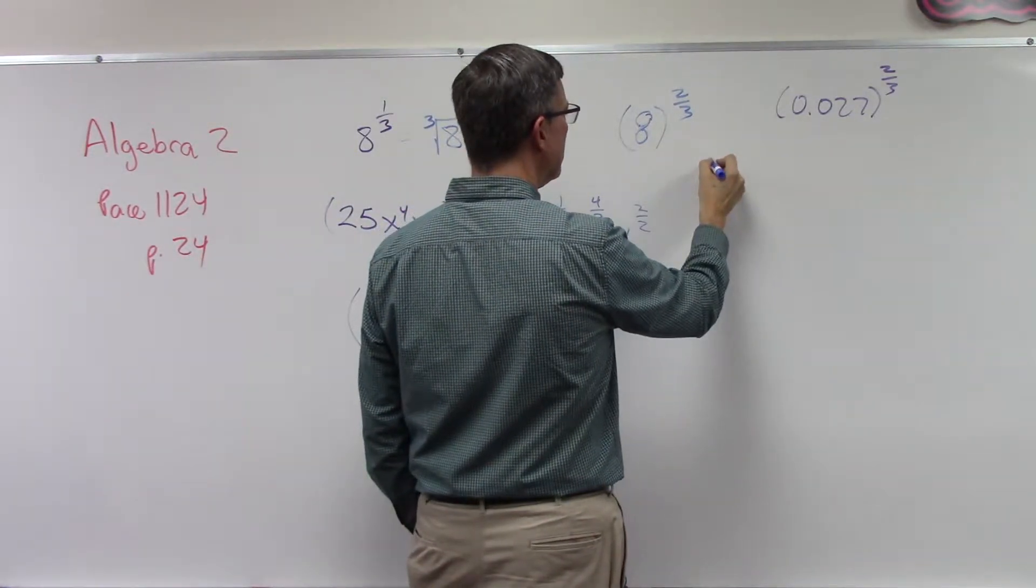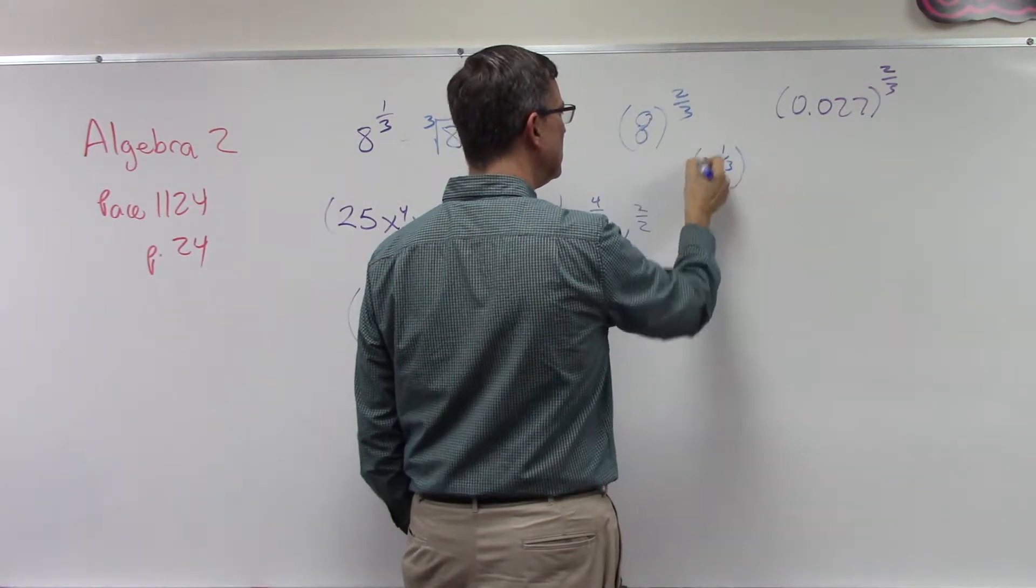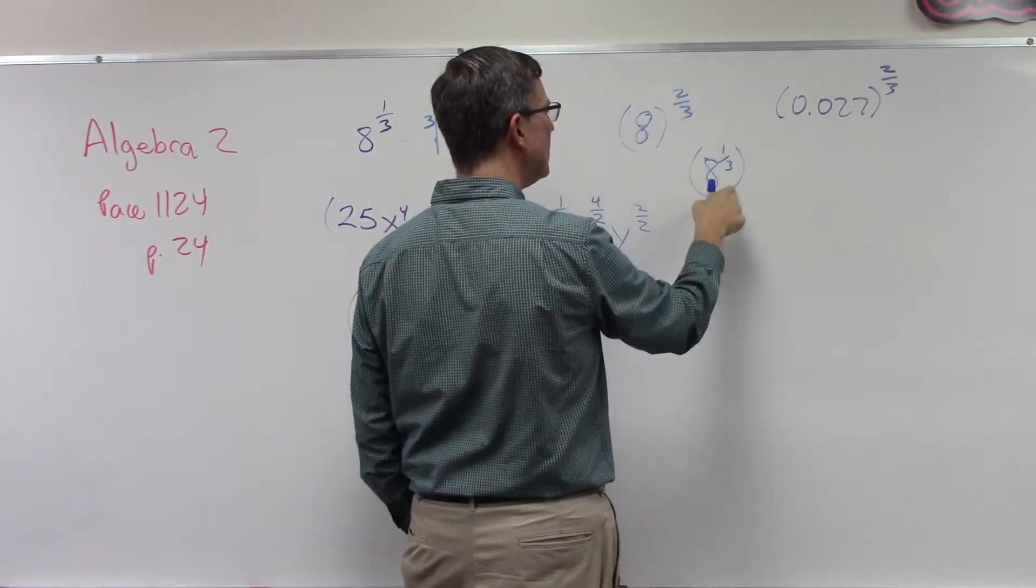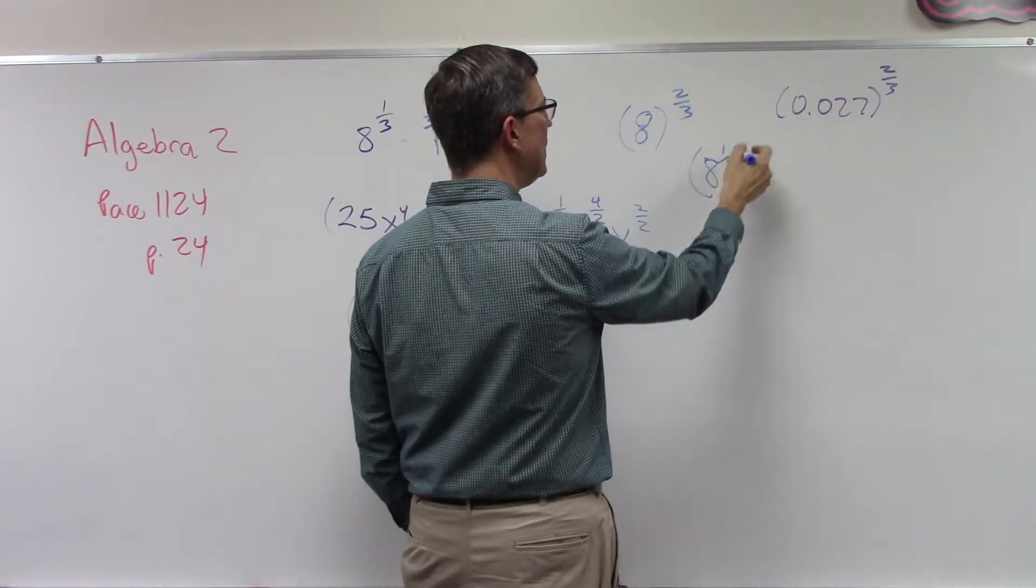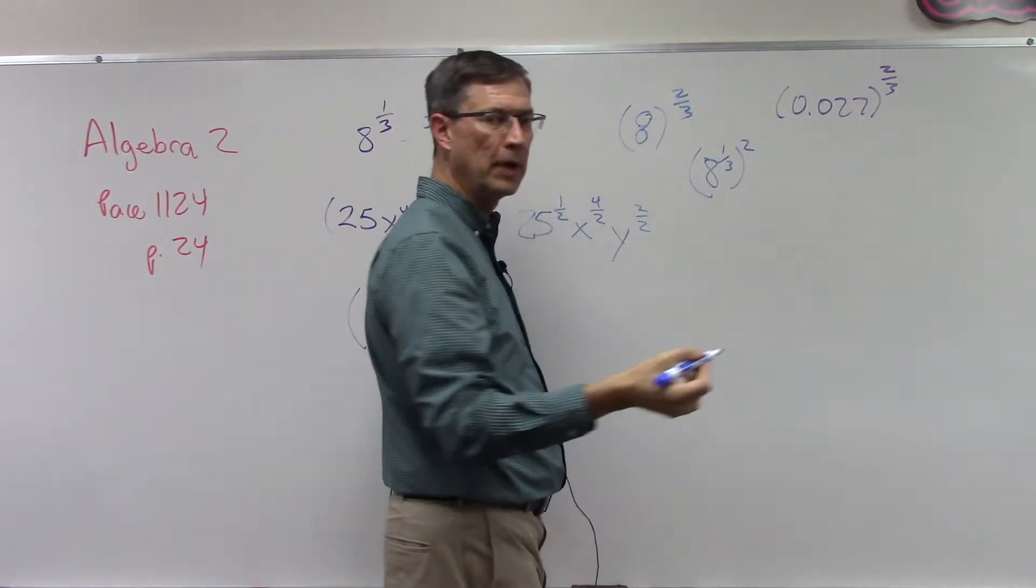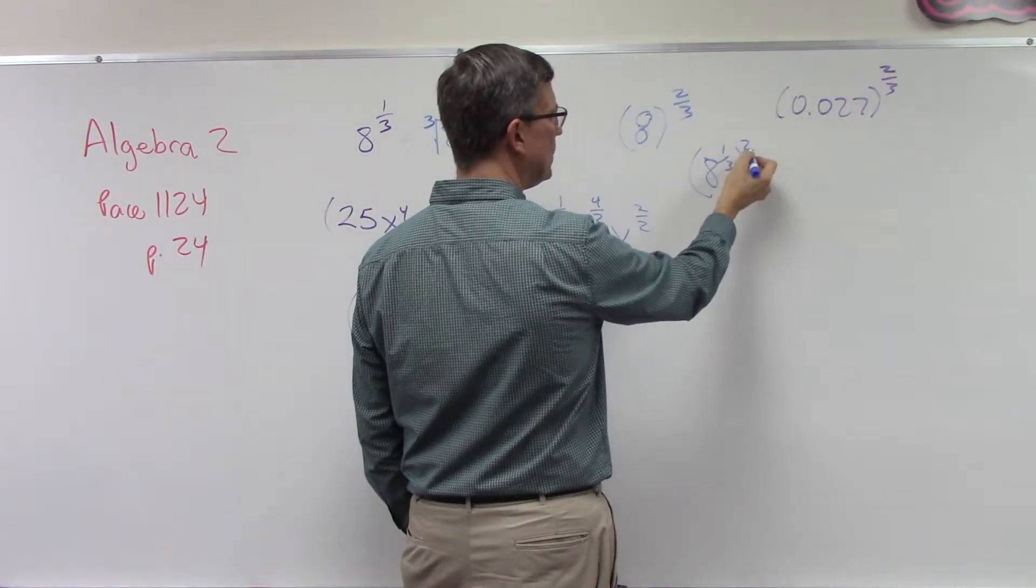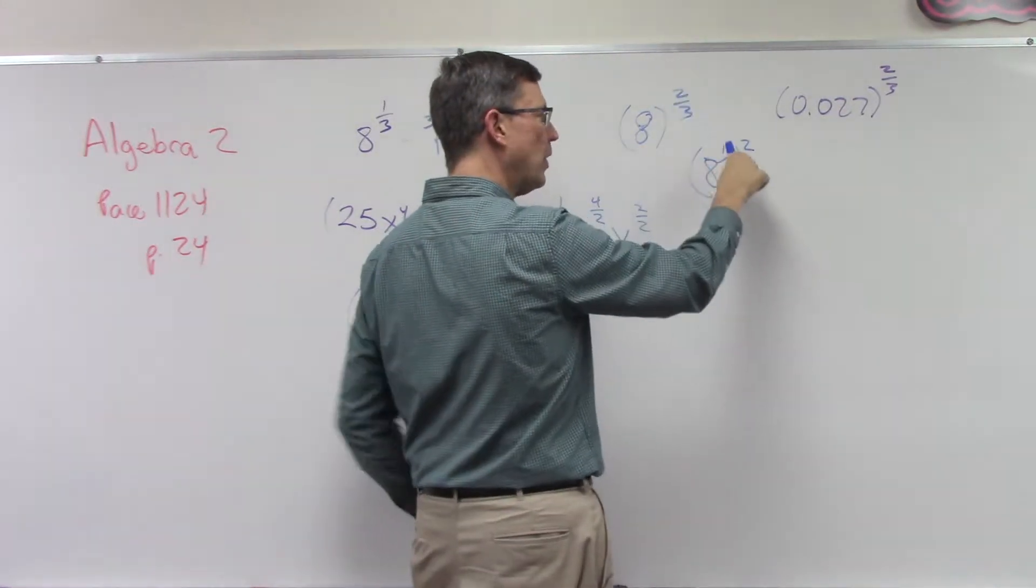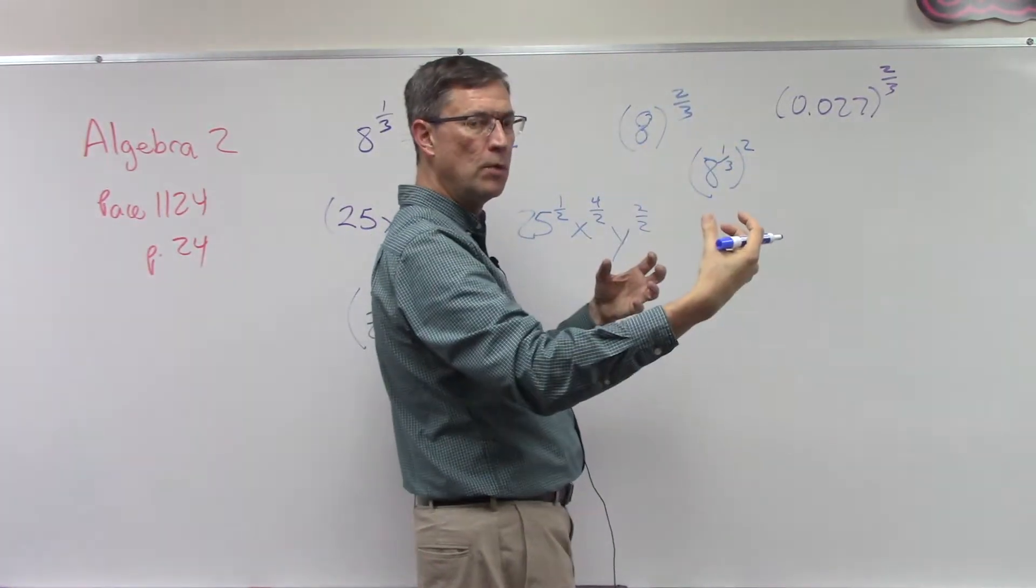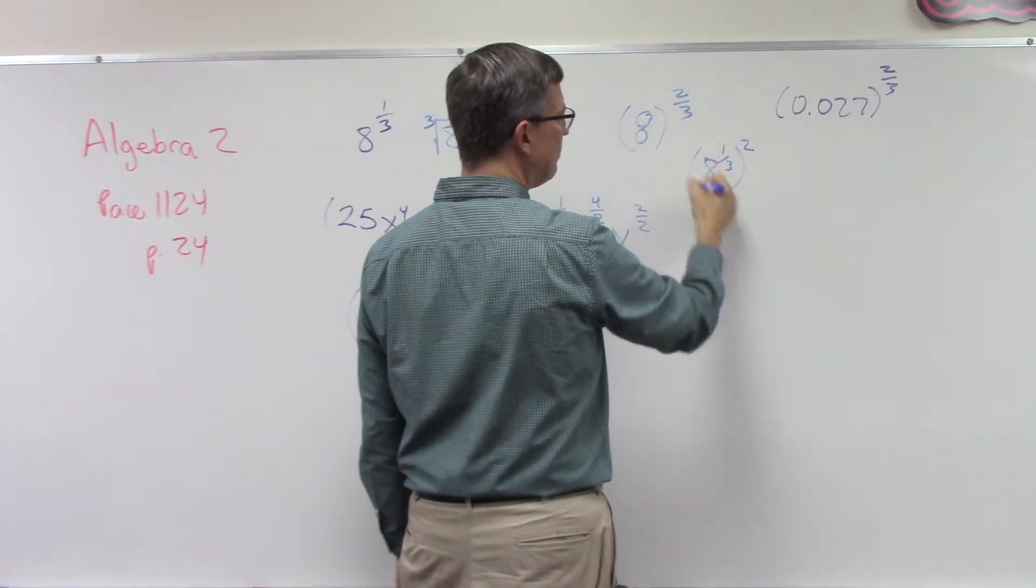We're going to break this apart and first do the exponent on the 8. So the denominator, 1/3, 8 to the 1/3, and then raise that to the second power. Notice if I multiply 2 times 1/3, I would have 2/3. But I'm going this direction, so I'm separating the numerator from the denominator. Leave the denominator inside the parentheses, pull the numerator outside.